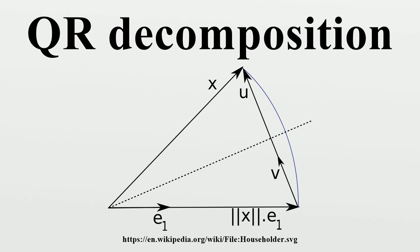Using Givens rotations: QR decompositions can also be computed with a series of Givens rotations. Each rotation zeros an element in the sub-diagonal of the matrix, forming the R matrix. The concatenation of all the Givens rotations forms the orthogonal Q matrix.